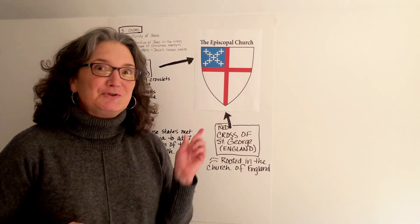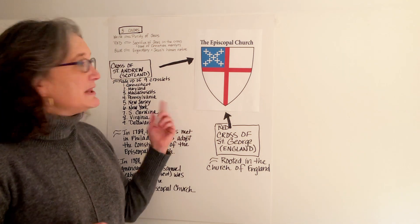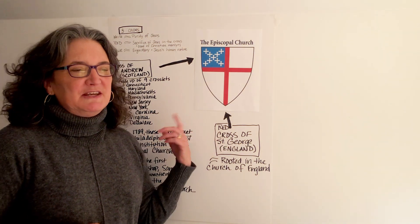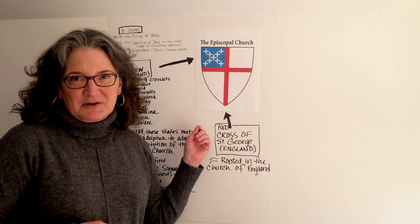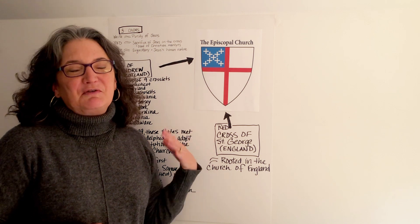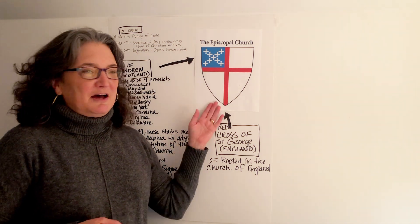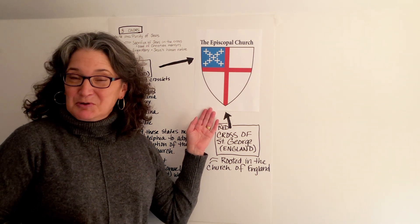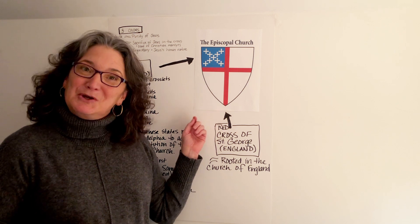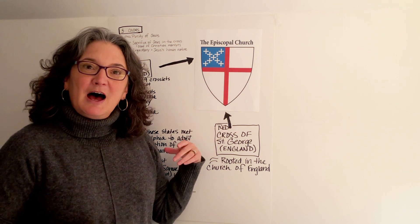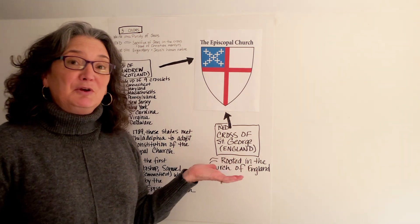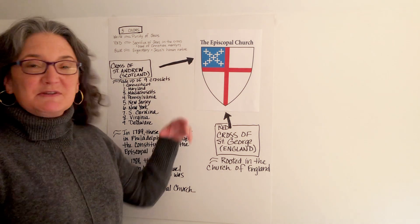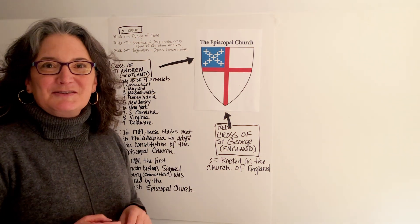So, to our shield — you've probably seen this shield. You see it outside Episcopal churches all the time. It's often shown with the welcoming words, 'The Episcopal Church welcomes you.' But you may or may not be familiar with the symbols of the shield, and I thought we'd talk about that.